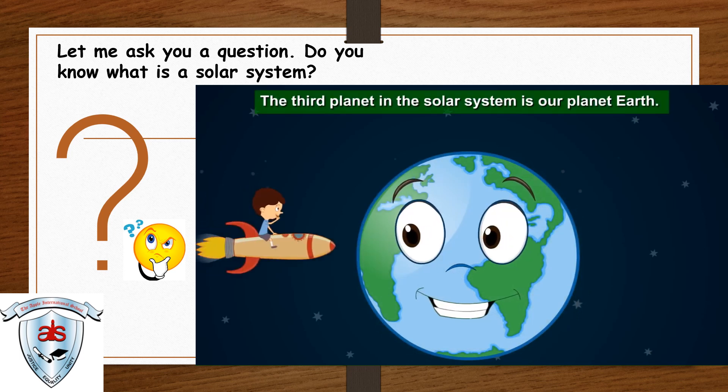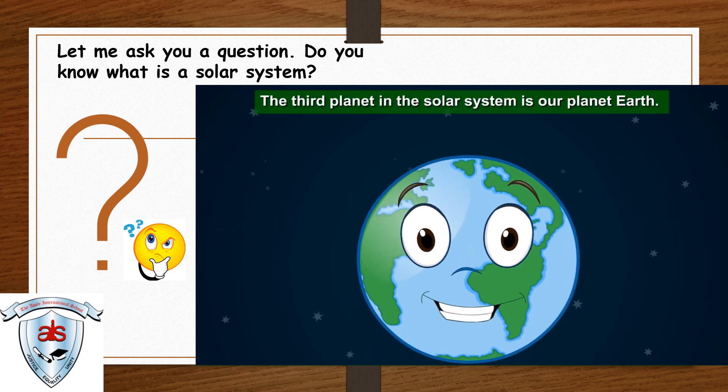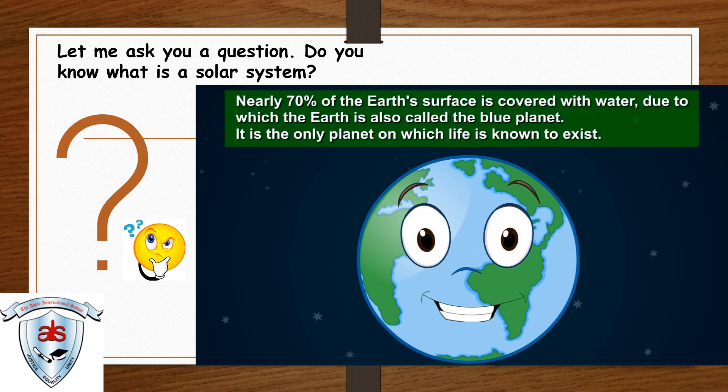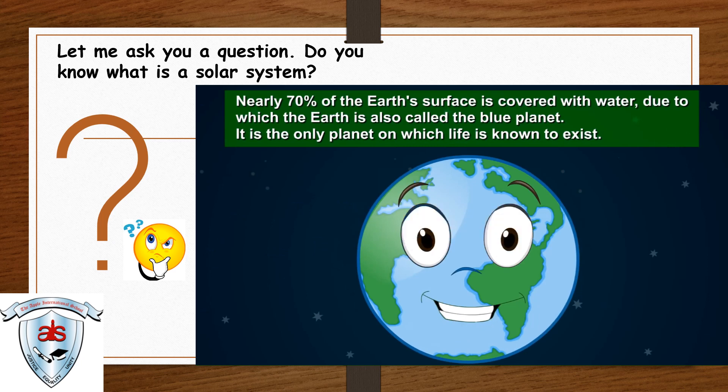The third planet in the solar system is our planet, Earth. Nearly 70% of the Earth's surface is covered with water. Due to which, the Earth is also called the blue planet. It is the only planet on which life is known to exist.